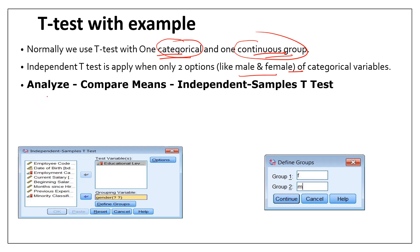To summarize, we are testing for significance — whether there is any difference between one categorical variable and one continuous variable. The categorical variable must have only two options, like male and female, yes and no, or one and zero.